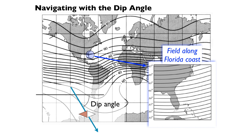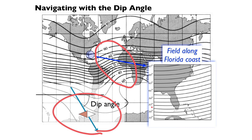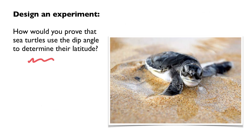Another thing we'll talk about is navigation with the Earth's magnetic field. Magnetotactic bacteria absolutely navigate using it, and so do sea turtles. Sea turtles don't care about north and south - they care about latitude. They can measure the dip angle of the Earth's field - the angle with respect to horizontal that the field points. Where we are, it points more down than north. By measuring the dip angle, they can determine where they are. We'll look at a test someone did to prove conclusively that sea turtles can use the Earth's magnetic field. That will be our grand finale for the week.